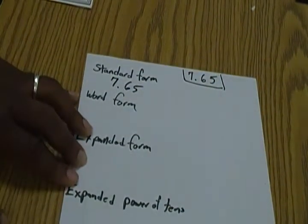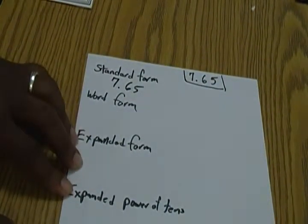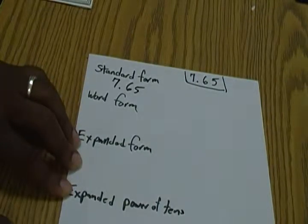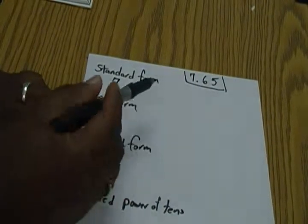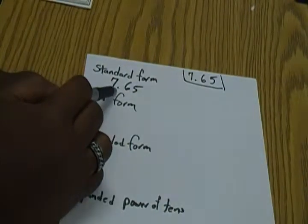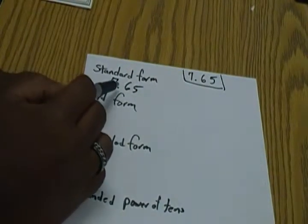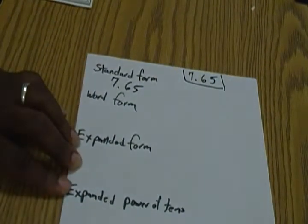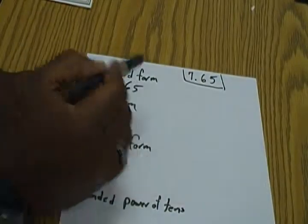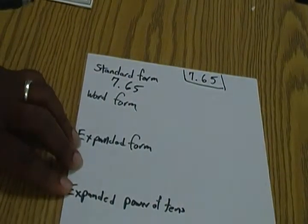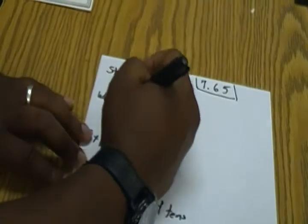Word form is just writing it out. We write it out exactly how we say it. So in this case we say seven, and the decimal point means 'and', sixty-five hundredths, because the five is in the hundredths place.